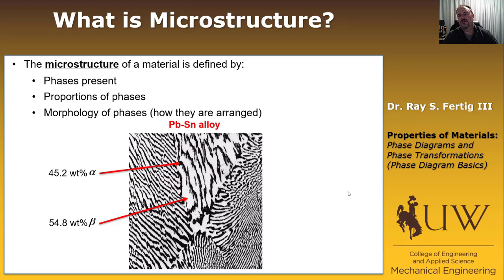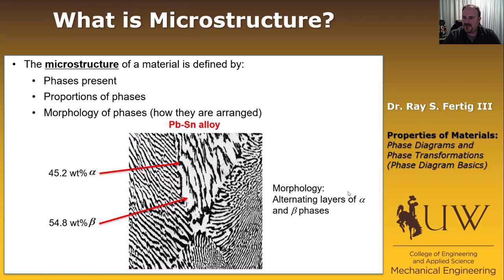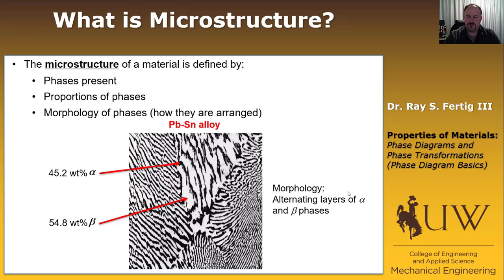The third and final descriptor for microstructure is the morphology — simply how the phases are arranged. We can look at this image and see that the morphology in this case is alternating layers of alpha and beta phases. Another morphology we might encounter is the alpha phase residing as spherical inclusions inside a beta matrix, for example. Those are the three features of microstructure that need to be described.